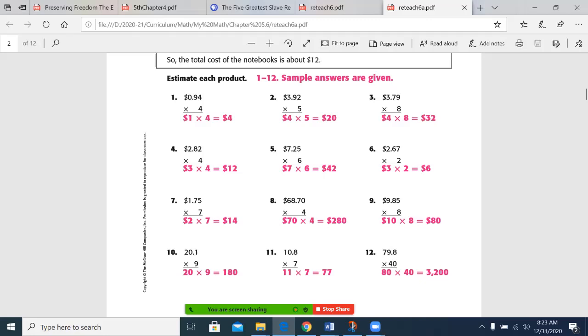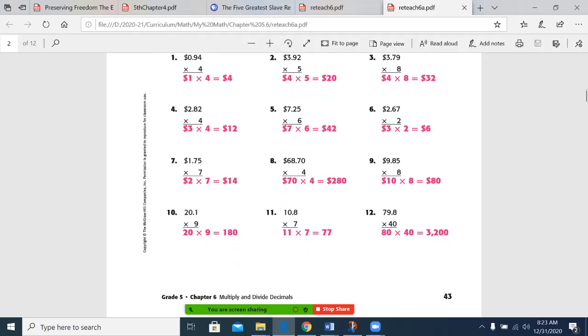So if this had been 2.42, you would have kept it at 2 and multiplied it by 4. 7 1/4 times 6, we rounded that to 7 times 6 is 42. This was rounded to 3 times 2 is 6. 2 times 7 is 14.